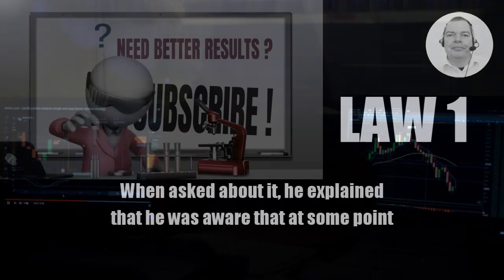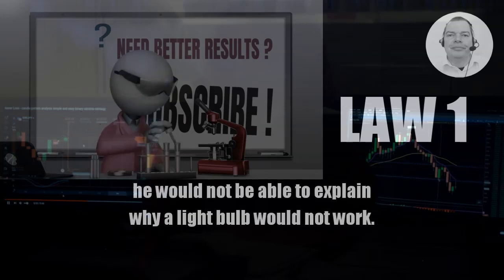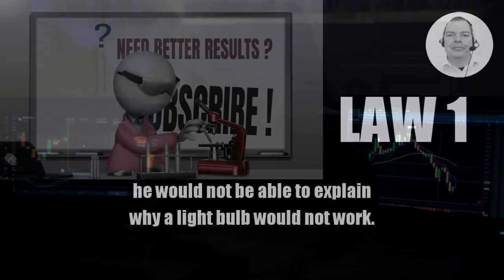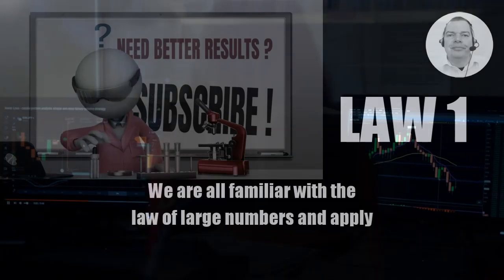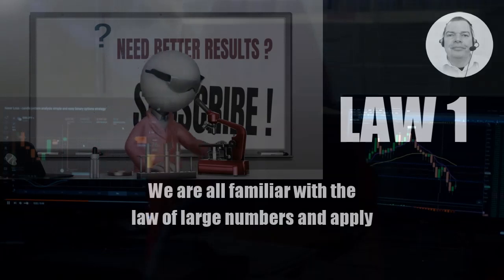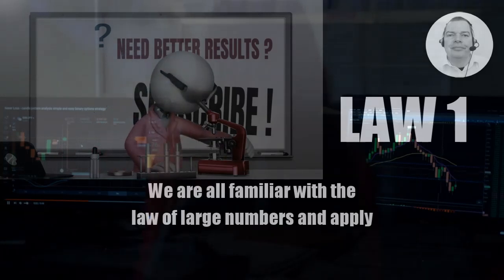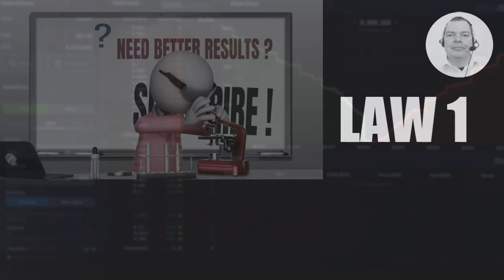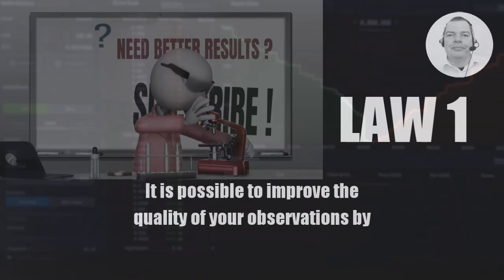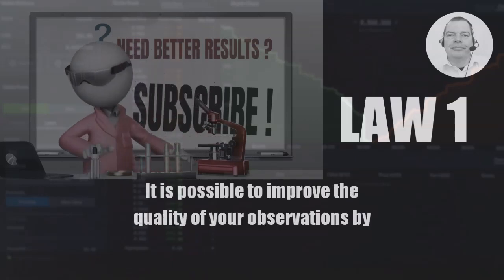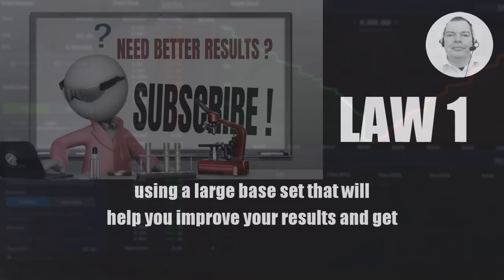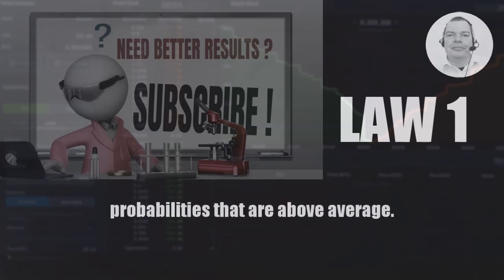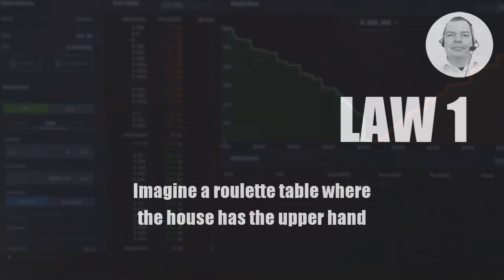When asked about it, he explained that he was aware that at some point he would not be able to explain why a light bulb would not work. We are all familiar with the law of large numbers and apply it in a variety of situations, such as election predictions. It is possible to improve the quality of your observations by using a large base set, which will help you improve your results and get probabilities that are above average.